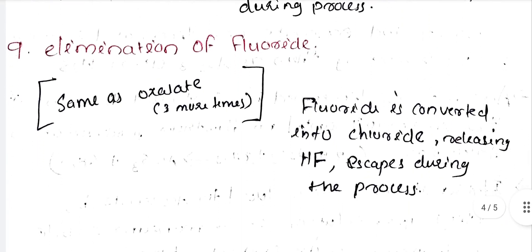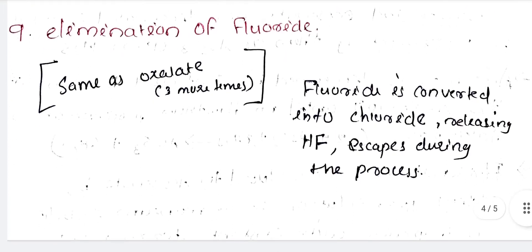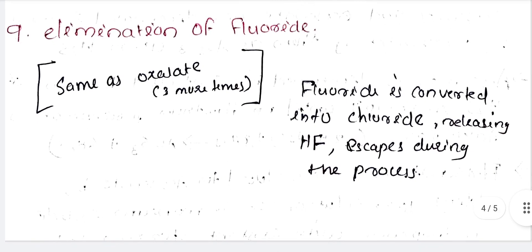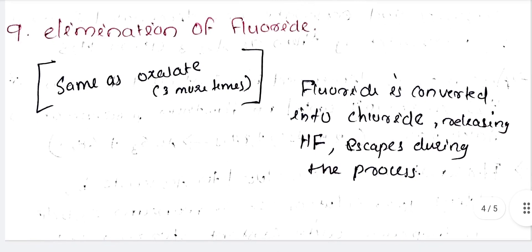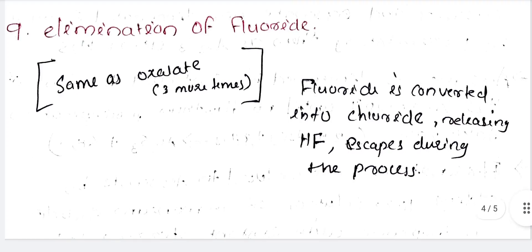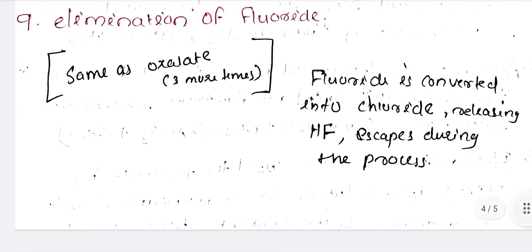Elimination of fluoride. The process is repeated three more times by adding fresh concentrated HCl. Fluoride is converted into chloride releasing HF, which escapes during the process.